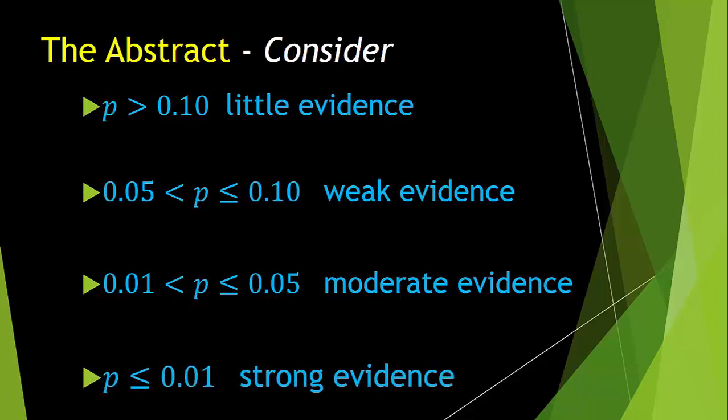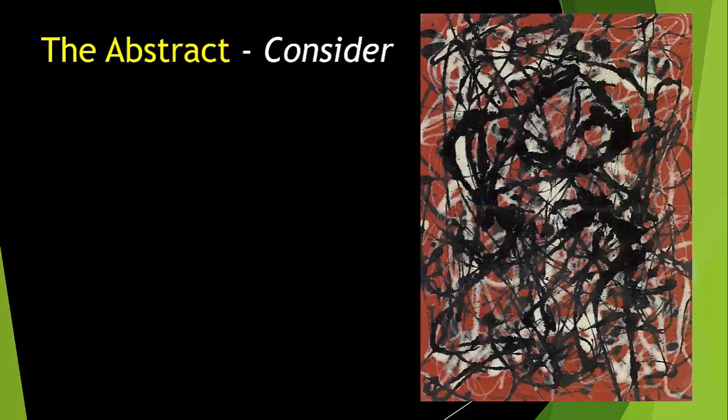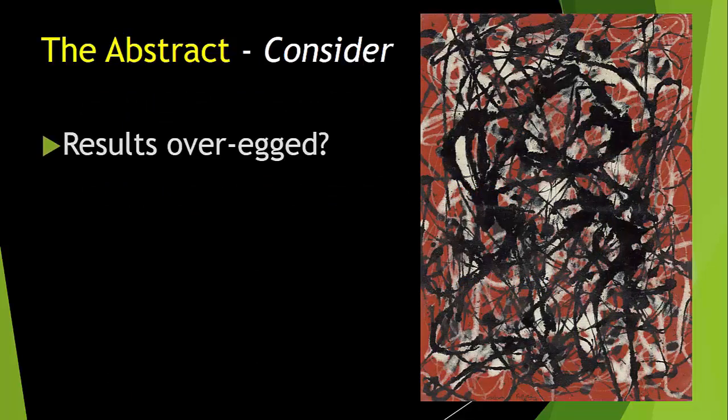And finally, if p is less than or equal to 0.01, then there is strong evidence against the null hypothesis. And these final two can be read as there is moderate or strong evidence of statistical significance. In other words, any differences seen are not at all likely to be due to chance and are therefore real in all likelihood.